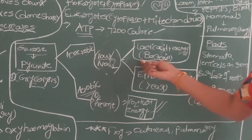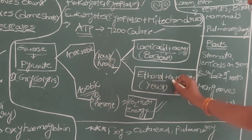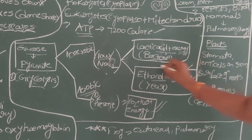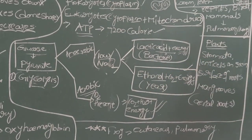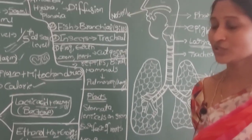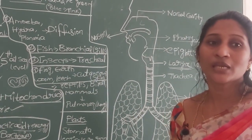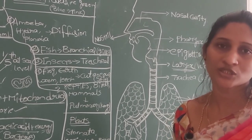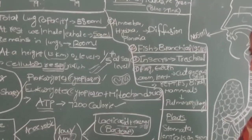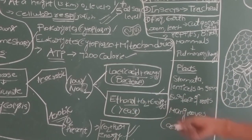In the absence of oxygen, anaerobic respiration occurs in organisms like bacteria and yeast, but the products differ. In bacteria, lactic acid and energy are released. In yeast cells, ethanol, carbon dioxide, and energy are produced — this is also called fermentation. Fermentation plays a very important role in bakery and beverage industries; CO2 released by yeast cells causes dough to rise in baking, and ethanol (ethyl alcohol) is produced in alcohol industries.